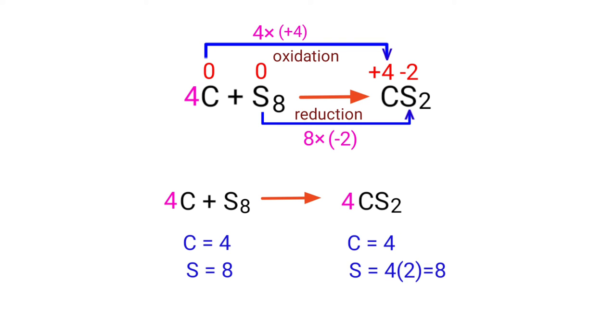The equation is now balanced. There are 4 carbon atoms and 8 sulfur atoms on both sides.